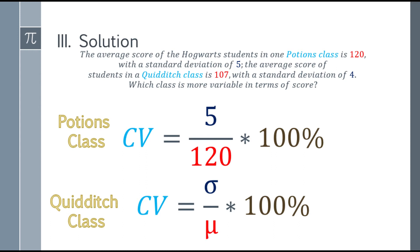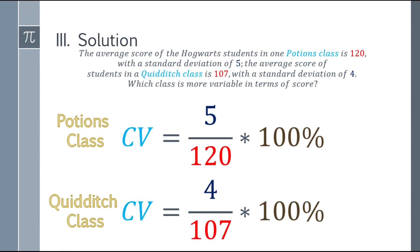Next, we have to substitute the values. So for the Potions class, we have CV is equal to 5 over 120, then multiply it by 100%. And for the Quidditch class, that will be CV is equal to 4 over 107, and also multiply by 100%.